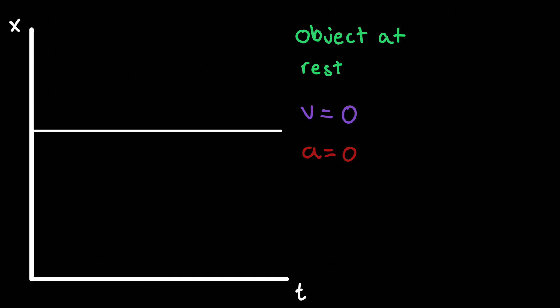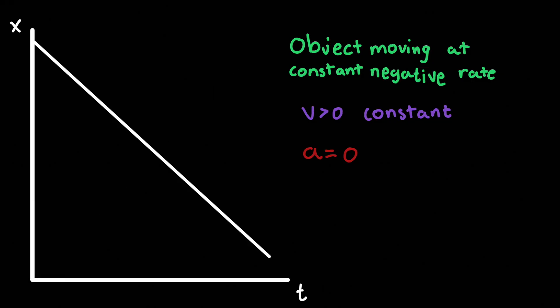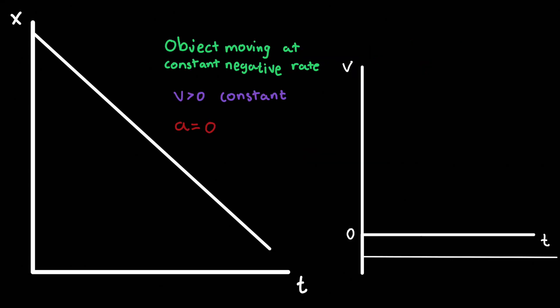Let's discuss the position versus time graph in more depth. If there's a straight horizontal line on the position graph, the object is not moving — zero velocity and zero acceleration. If there's a constant positive rate of change, velocity will be constant and positive, but acceleration will be zero. If the position time graph has a negative change in position, the object is going in the opposite direction — usually left, given that right is positive and left is negative. Anytime velocity is constant, acceleration is zero, since acceleration is a change in velocity.